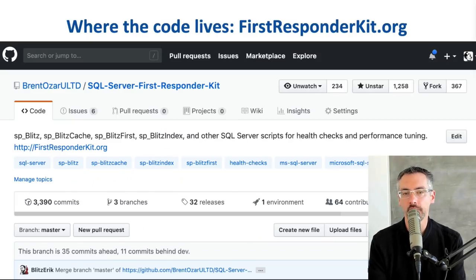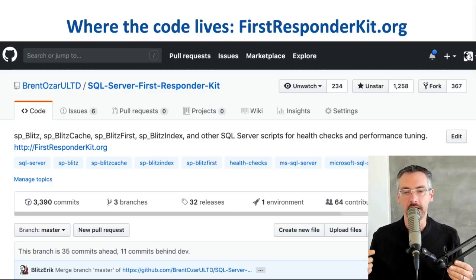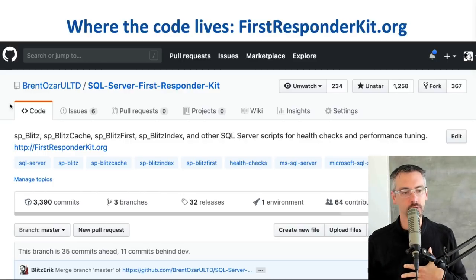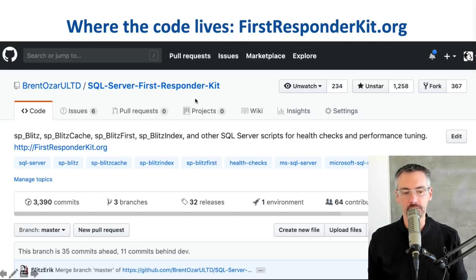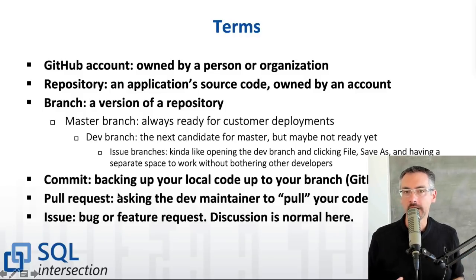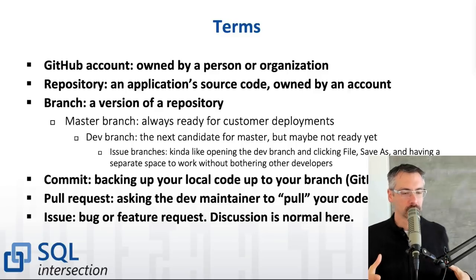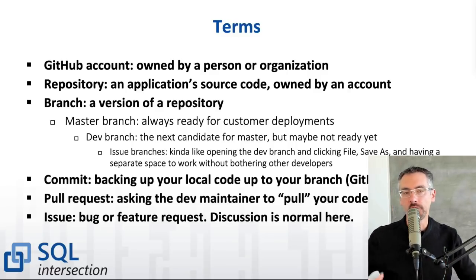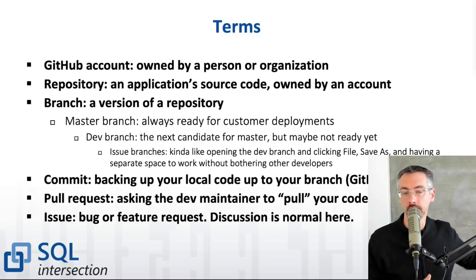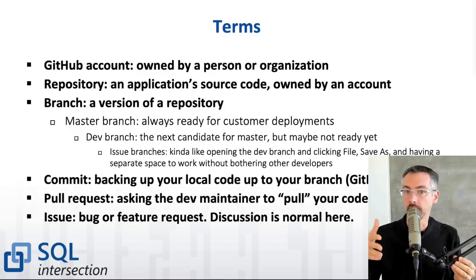Before I go in, let me give you a quick glossary of terms. A GitHub account you can think of as either you or a company — in our case, the First Responder Kit is managed by Brentozar Unlimited. A repository you can think of as a folder or a project — we have one repository just with the First Responder Kit scripts. Those of you who've used Ola Hallengren's maintenance scripts, he has a repository too. There are lots of popular repositories where you can look at code and check in your own changes.